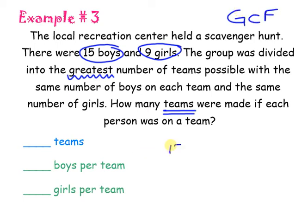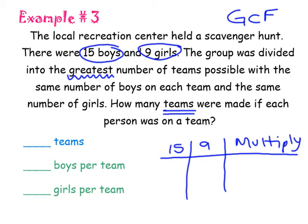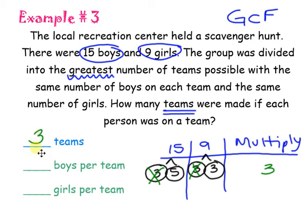So, I need to find the GCF of 15 and 9. And I'm going to make myself a multiply column here as well. So, I'm going to make my factor trees. This is going to be 3 and 5. This is going to be 3 and 3. So, now, it looks like I have 3's that match. And so, I'm going to bring one over. And I have no other matches. So, my GCF is that they can create 3 teams.